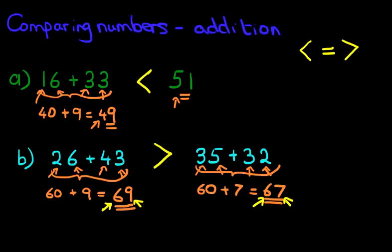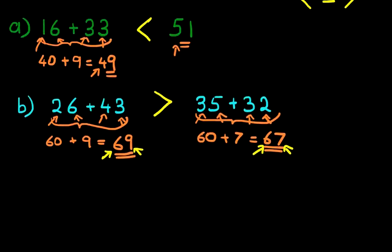Now let's just scroll down so that we can work through a third example. Now suppose we've got 47 plus 26 and on the other side we have 34 plus 39.